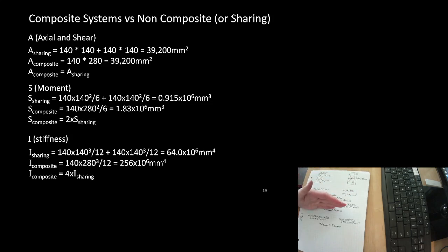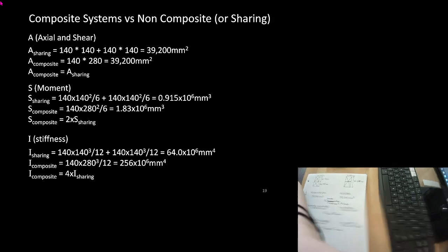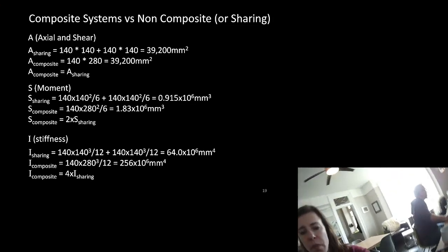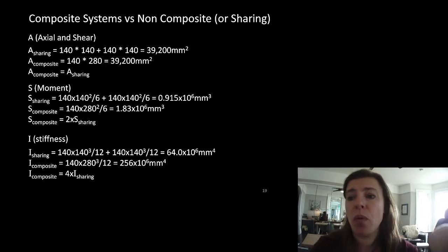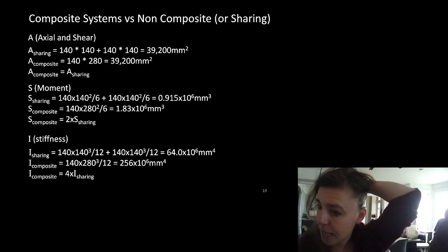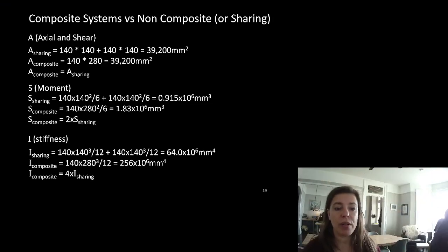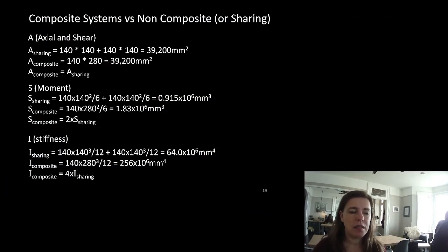Making things composite has a huge impact on bending moment capacity and stiffness, but doesn't significantly affect shear and axial load capacity. That is a huge takeaway.